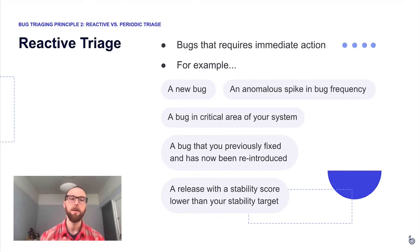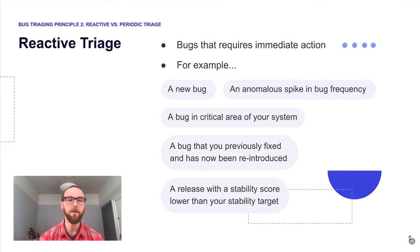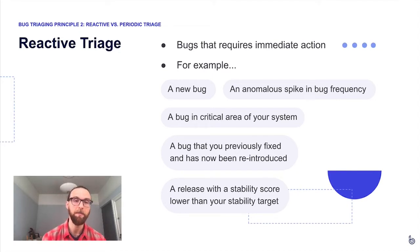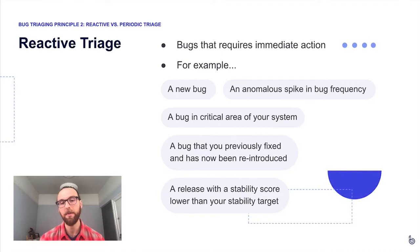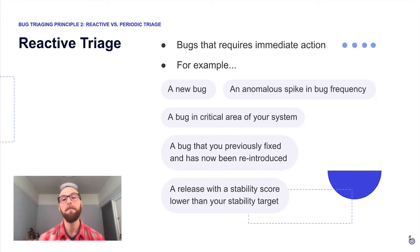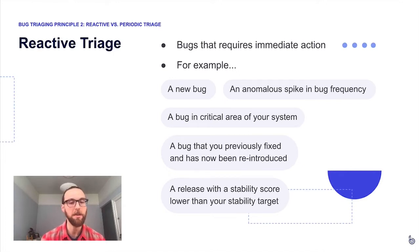When determining which category a bug falls into, there are two main workflows: reactive triage and periodic triage. Reactive triage is the scenario where a bug occurs — or something changes with a bug's frequency — and it requires someone on your team to drop what they're doing and investigate immediately. These tend to be high-impact bugs or bugs affecting a critical area of your system. Examples include a new bug the system has never seen before, or a bug that BugSnag has detected an anomalous spike in frequency for.